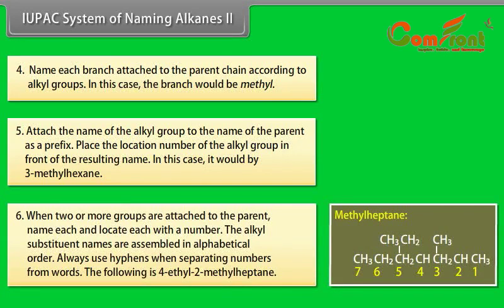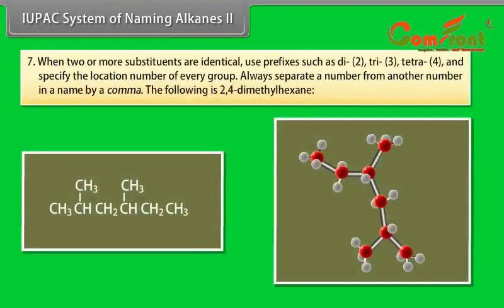6. When two or more groups are attached to the parent, name each and locate each with a number. The alkyl substituent names are assembled in alphabetical order. Always use hyphens when separating numbers from words. The following is 4-ethyl-2-methylheptane. 7. When two or more substituents are identical, use prefixes such as di- for 2, tri- for 3, tetra- for 4, and specify the location of every group. Always separate a number from another number in a name by a comma. The following is 2,4-dimethylhexane.